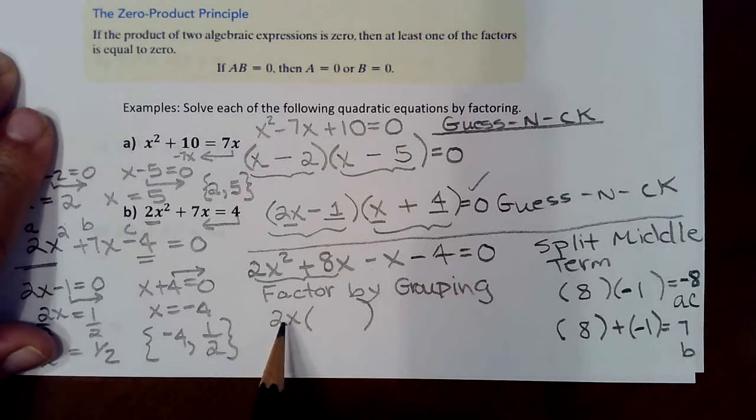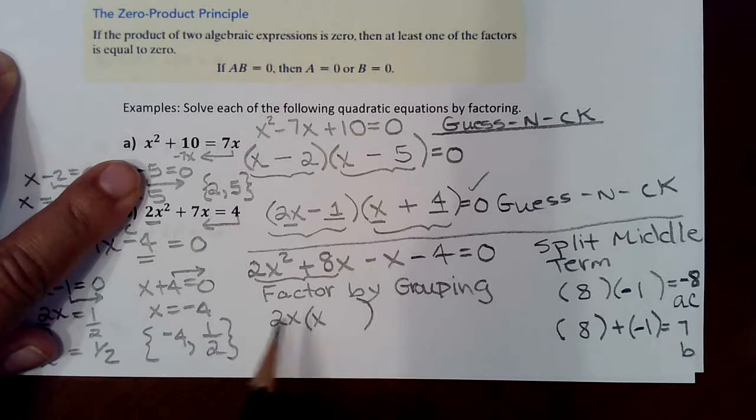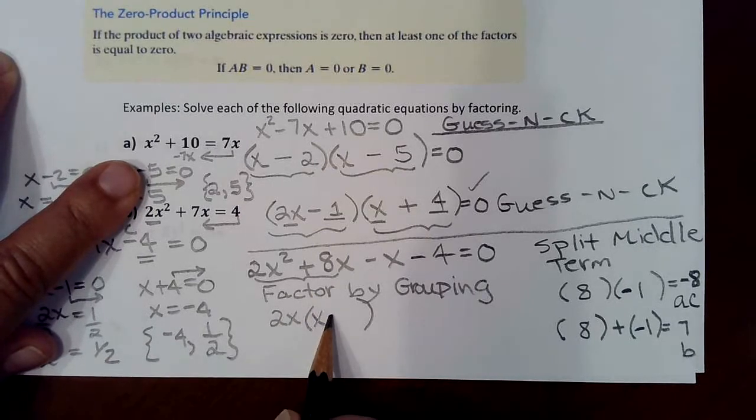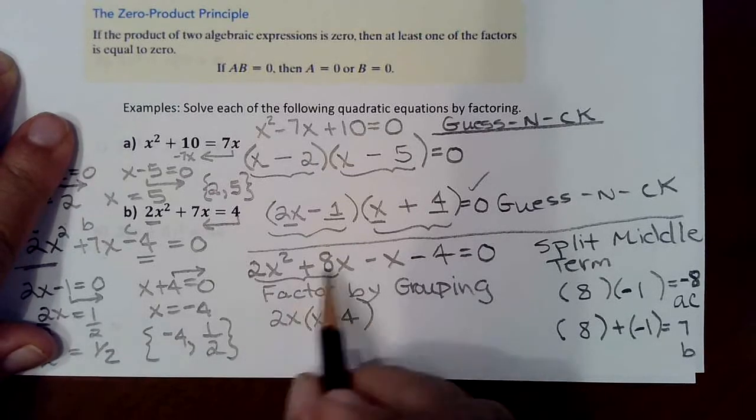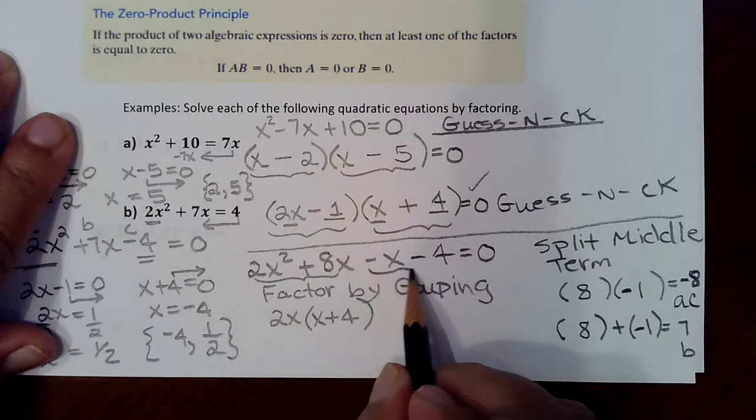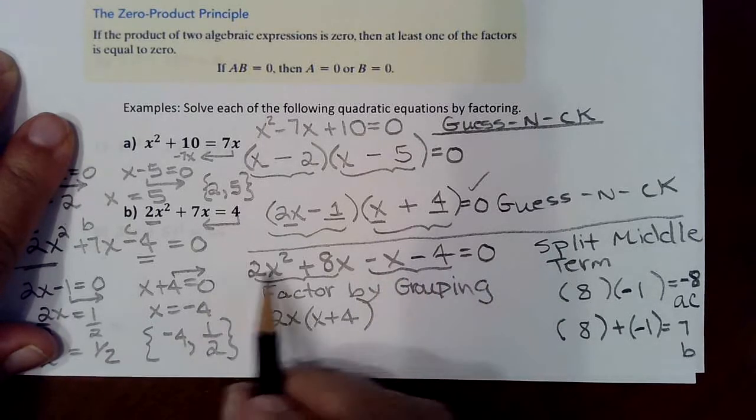And ask yourself, what do I multiply this by to get this term back again, which would be x? What do I multiply this by to get that term back again? Then you forget about these terms, move to the back two terms, considering the signs in front of them, just like we did here.